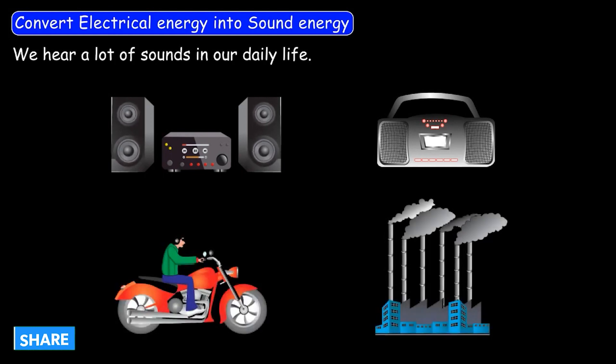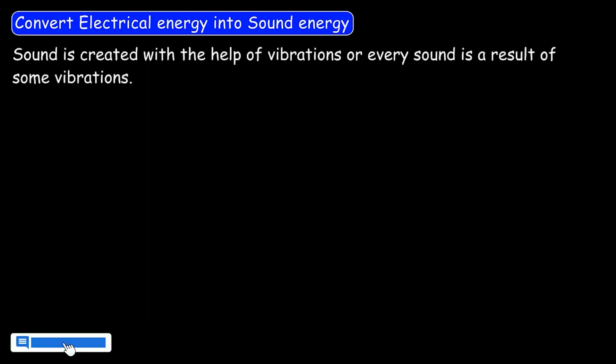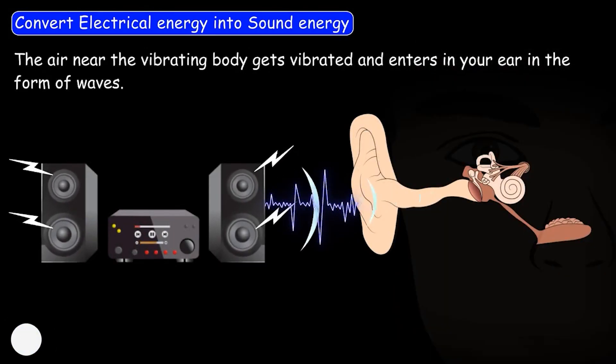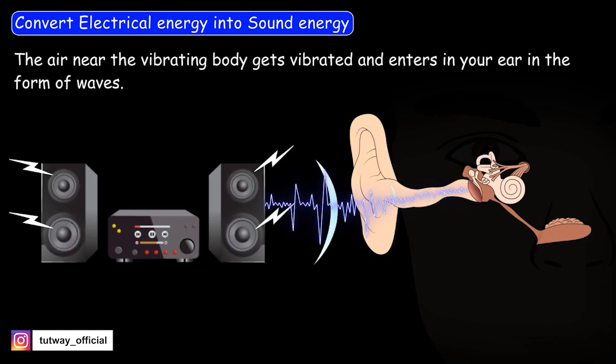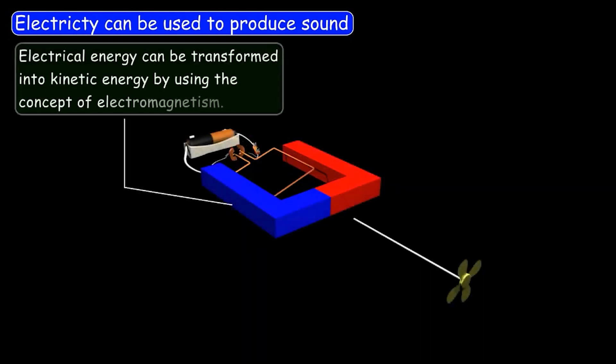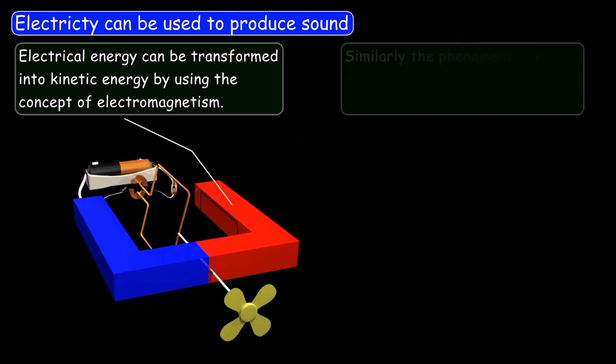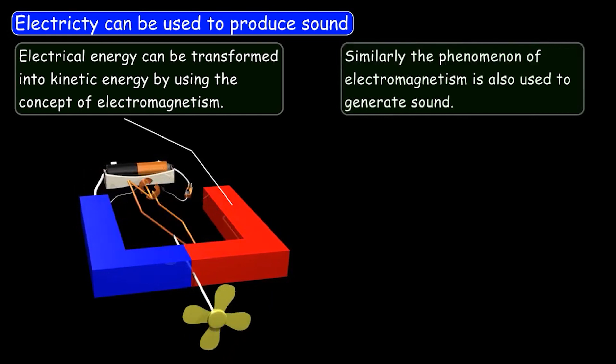Now let's learn the concept of conversion of electrical energy into sound energy. We hear many sounds in daily life, such as the sound of a music player, radio, vehicles, and industries. Sound is created with the help of vibrations — every sound is the result of some vibrations. The air near the vibrating body gets vibrated and enters your ear in the form of waves, enabling you to hear the sound. Similarly, electromagnetism can be used to generate sound.